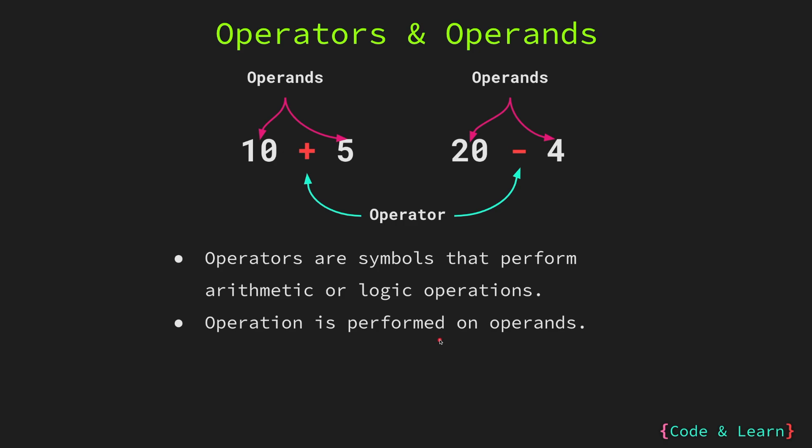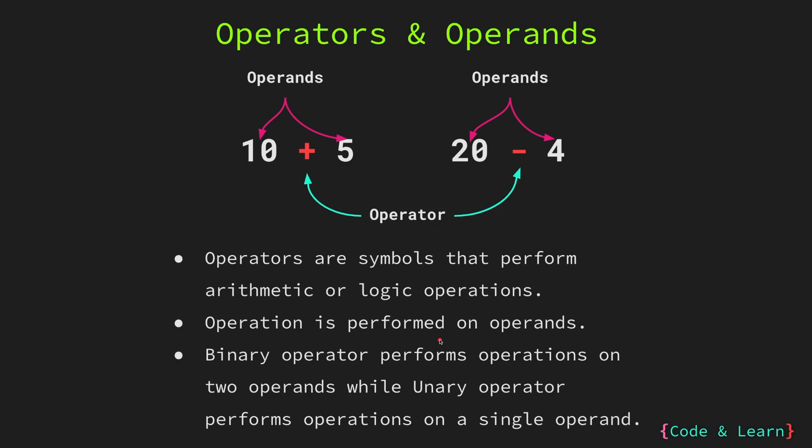In our expression above, 10, 5, 20 and 4 are all operands that the operators are performing the operation on. There are two kinds of operators: binary and unary. The binary operators perform operations on two operands, while the unary operator performs the operation on a single operand.